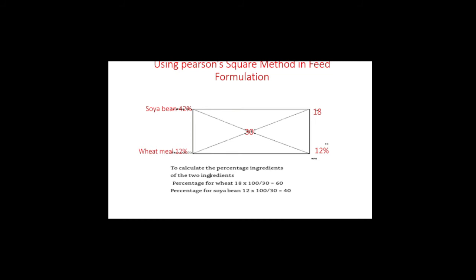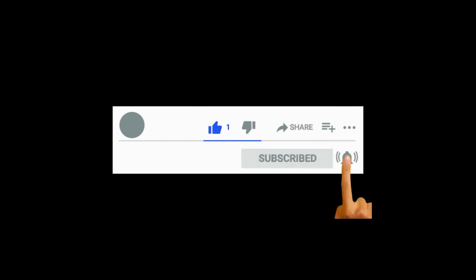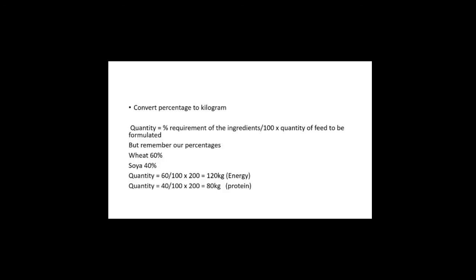All these answers are in percentage. Now, how do you convert them to kilograms so that we know the volume to measure of each ingredient in the formulation? To convert percentage to kilogram, you need to know the quantity of feed you want to produce. For example, let's say you want to produce 200 kg of feed.